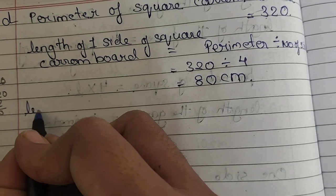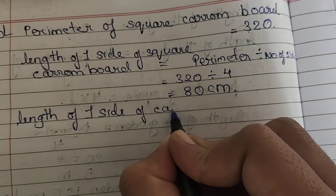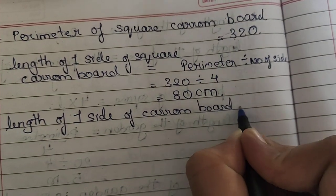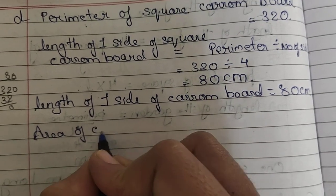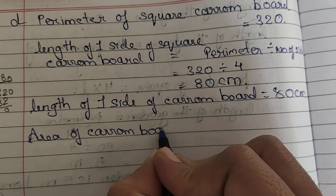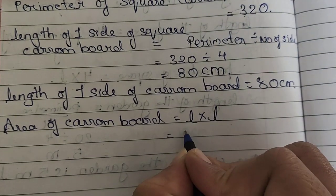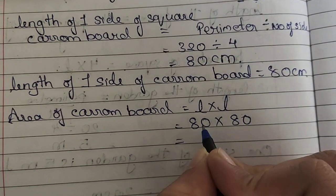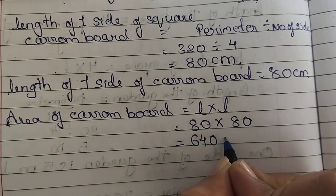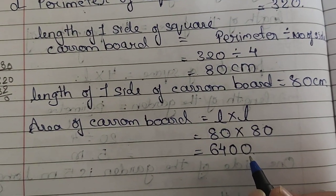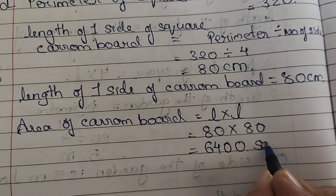We got the length of one side of the carom board equals 80 centimeters. Therefore, the area of the carom board equals L × L. L is 80, so 80 multiplied by 80. Eight 8s are 64, and with two zeros that gives 6400. So the area of the carom board is 6400 square centimeters.